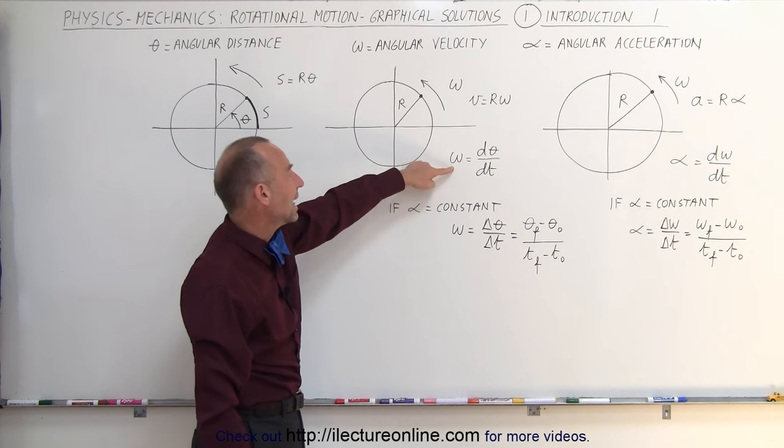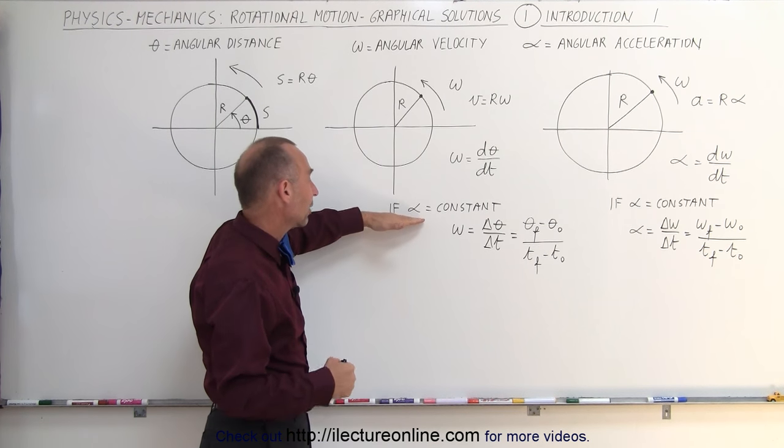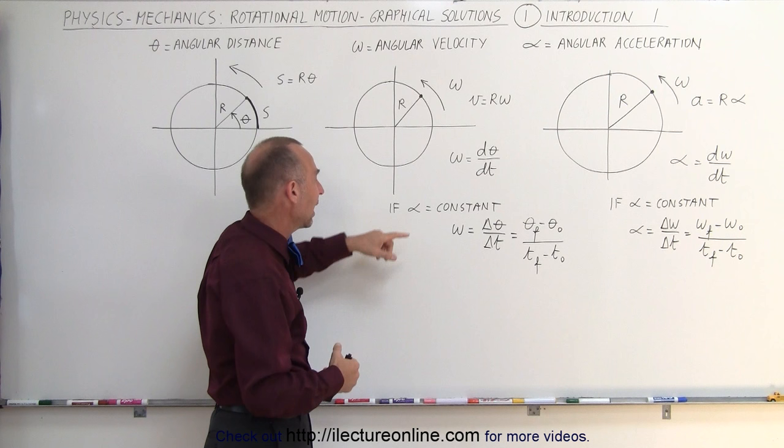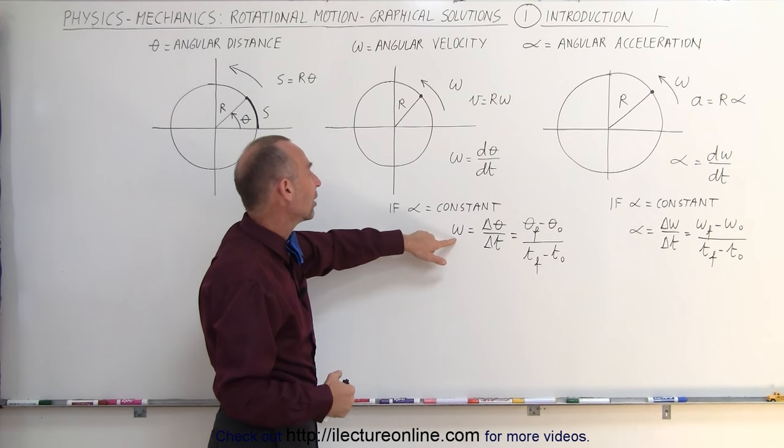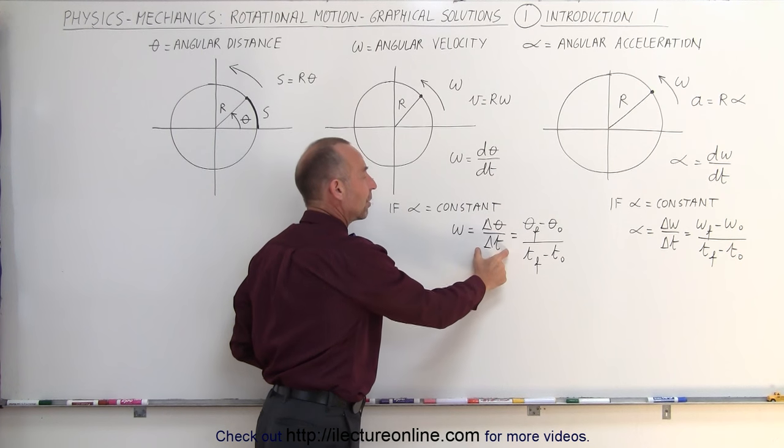This is called the instantaneous angular velocity. But if the angular acceleration is constant, if we're always dealing with constant angular acceleration, then we can say that omega can be defined as a certain amount of angle covered in a certain amount of time